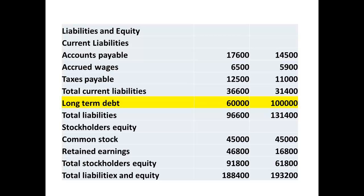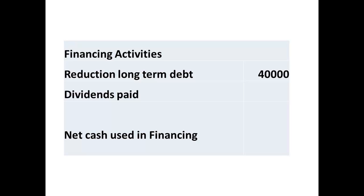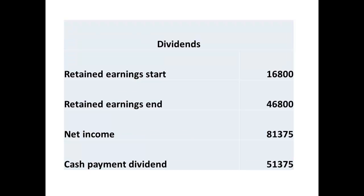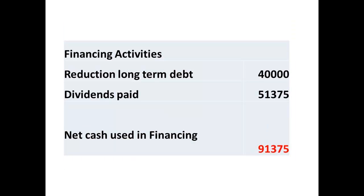Finally, we look at financing activity. The balance sheet tells us that long-term debt was reduced from $100,000 to $60,000, so a reduction of $40,000 was made as a financing activity during the year. To determine dividends paid, we look at the change in retained earnings at the start and end of the year, subtract this from the net income, and the remainder is the cash payment made as a dividend. We now have a figure of $91,375 for financing activities — this is a cash outflow.